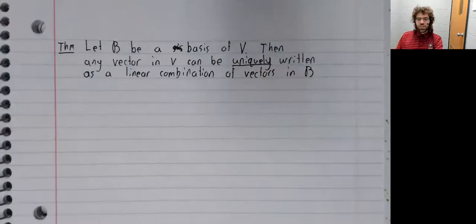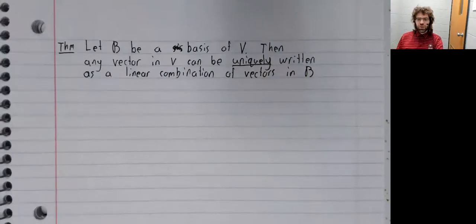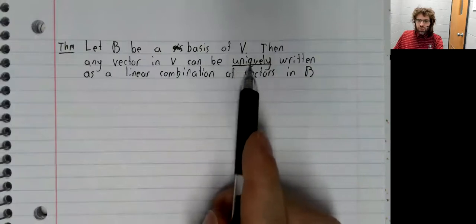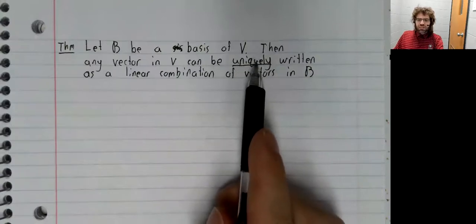Let B be a basis of V. Then any vector in V can be uniquely written as a linear combination of vectors in B. And you see, I underlined uniquely because that's the important word here.